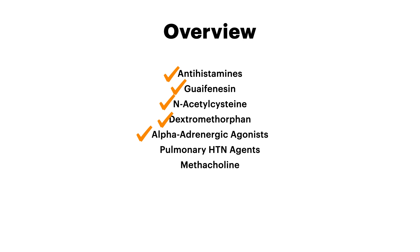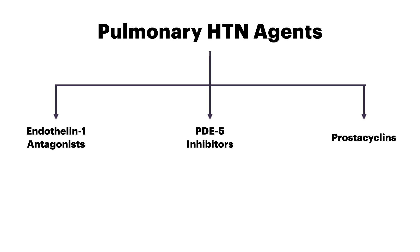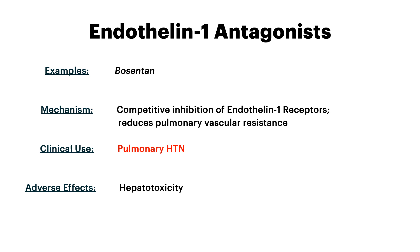Now let's talk about pulmonary hypertension agents. If I was going to pick one category of medications to know from this video in terms of how high yield everything is, this is what I would say to memorize. We're going to talk about three different subcategories: endothelin-1 antagonists, PDE5 inhibitors, and prostacyclins. Starting with endothelin-1 antagonists — the example is bosentan. The mechanism is competitive inhibition of endothelin-1 receptors, which reduces pulmonary vascular resistance and improves pulmonary hypertension. The main adverse effect to know is hepatotoxicity.